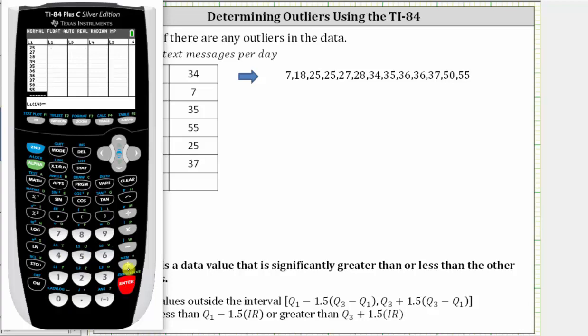And now we're going to create a box plot in order to determine the outliers. To do this, we need to turn the box plot on by pressing second, y equals for stat plot. Press enter. Highlight on and press enter. And now we want to turn on the modified box plot or the box plot that will show the outliers, which is this fourth option here. So we press down, right arrow three times to this option, press enter.